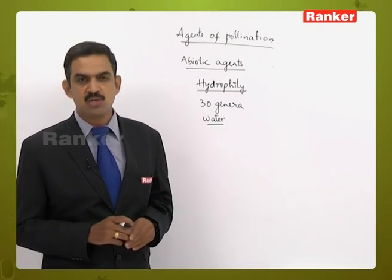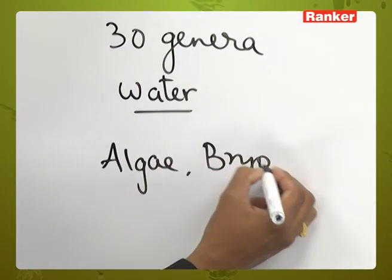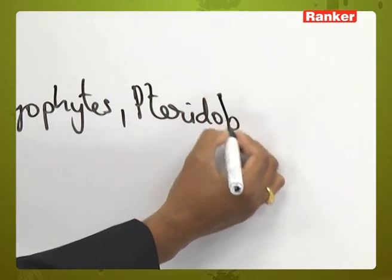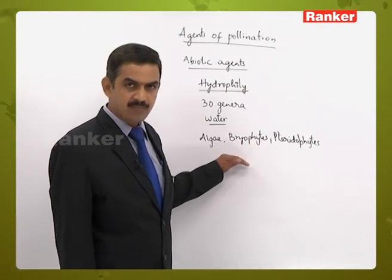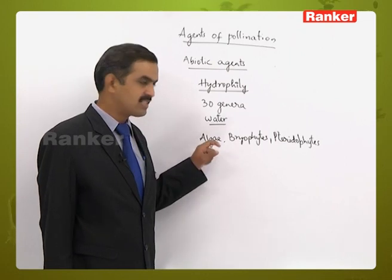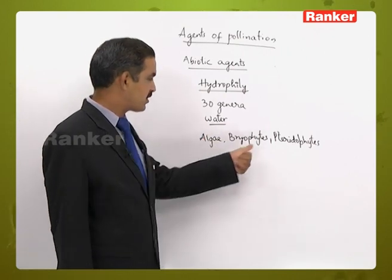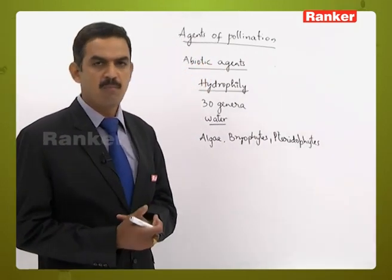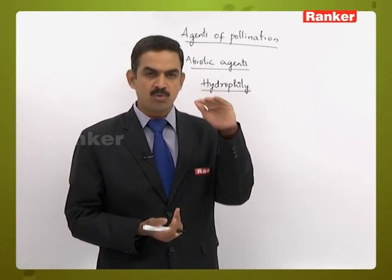Hydrophily is observed in lower groups of plants, particularly algae, bryophytes, and pteridophytes, because in these groups the male gametes are motile with flagella or cilia, allowing them to swim in water and reach female reproductive structures. In higher plants like angiosperms, only very few plants exhibit hydrophily.